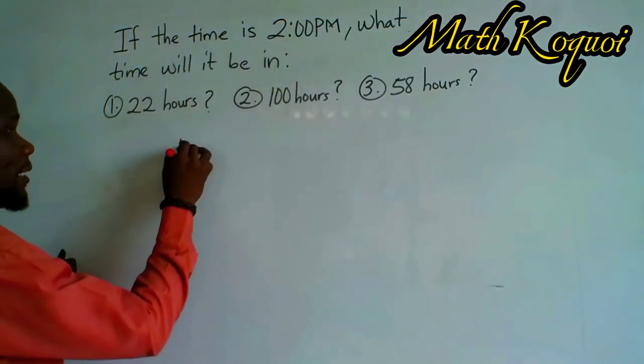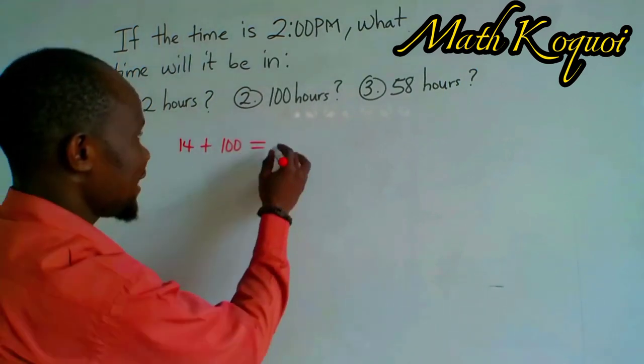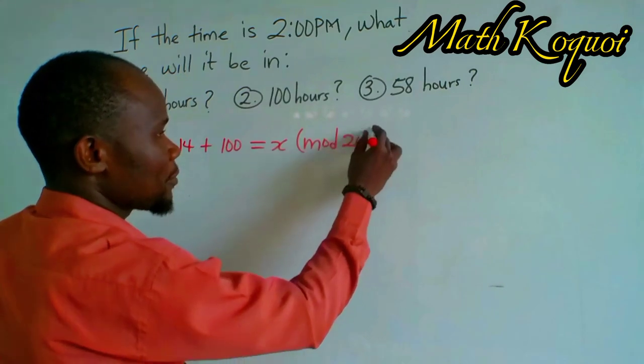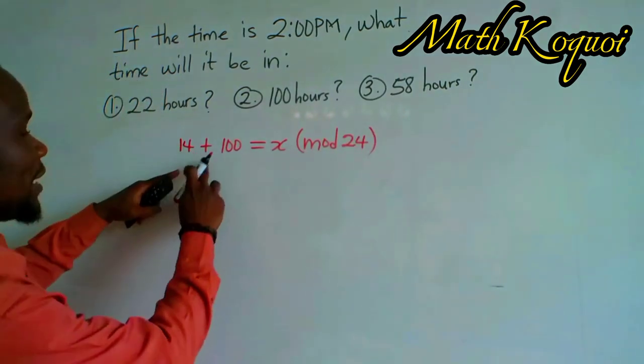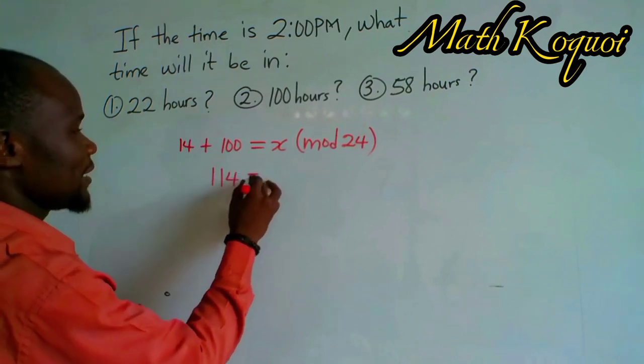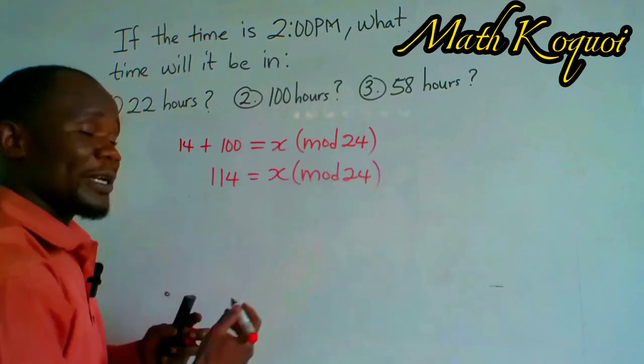So we say 14 plus 100 is equal to any variable, we can say X, mod 24. So again, 14 plus 100 gives us 114 is equal to X mod 24.